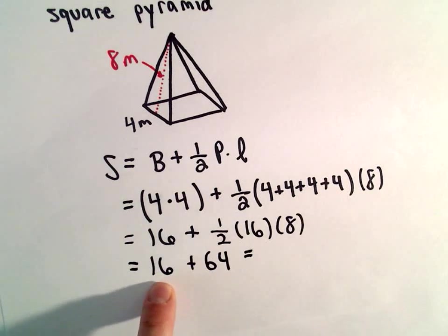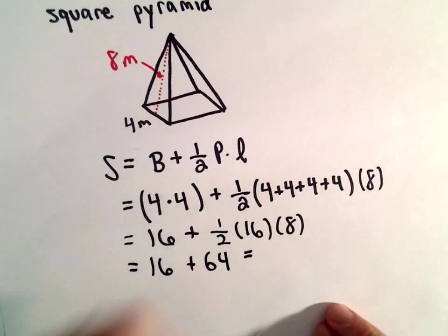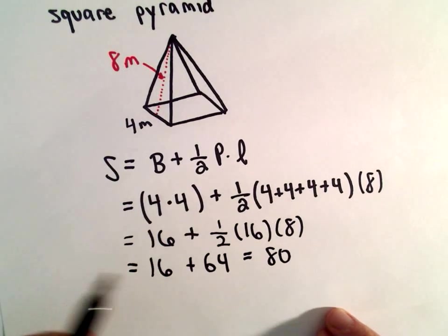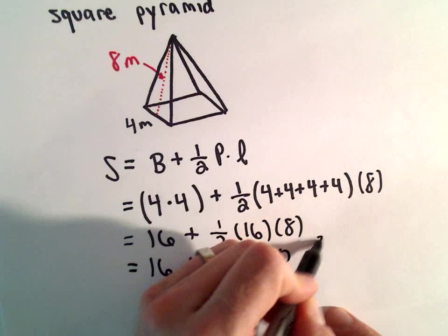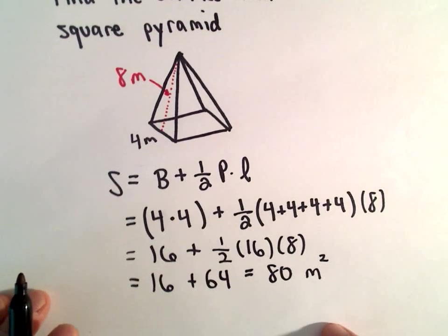64 plus 16 gives us 80. Our units are square meters, since we started with meters.